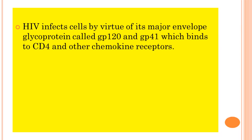HIV infects cells by virtue of its major envelope glycoproteins, gp120 and gp41. These envelope glycoproteins can bind to the CD4 receptor and chemokine receptors present on T helper cells, monocytes, or macrophages. gp120 and gp41 bind to CD4 and other chemokine receptors present on these target cells.